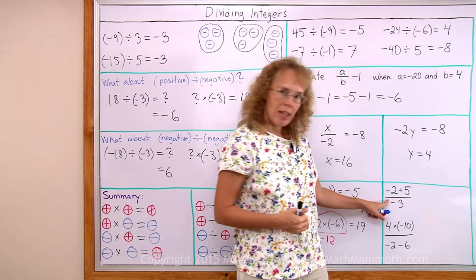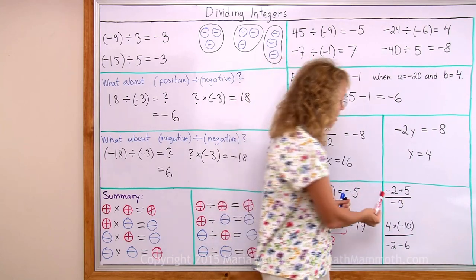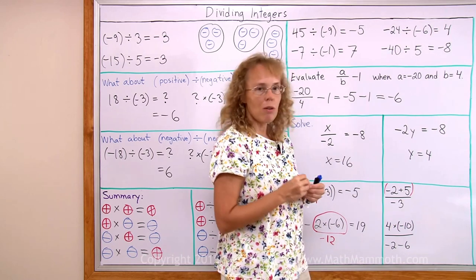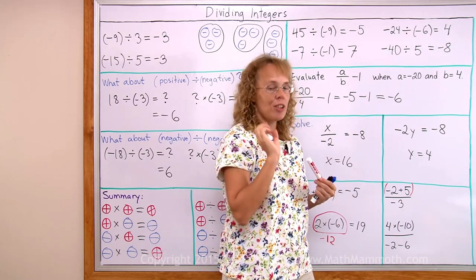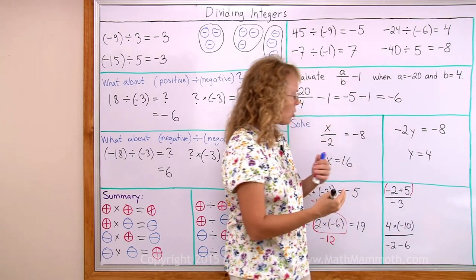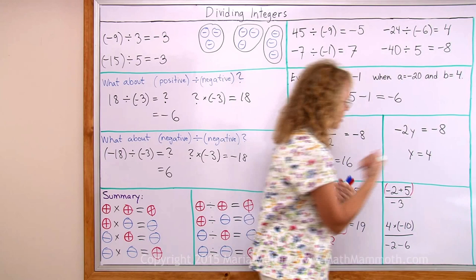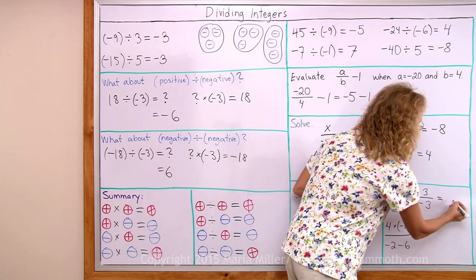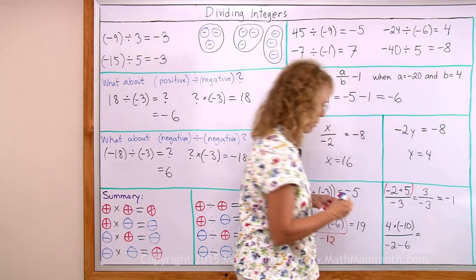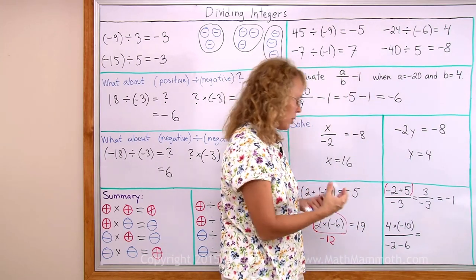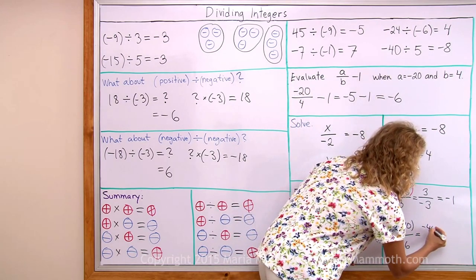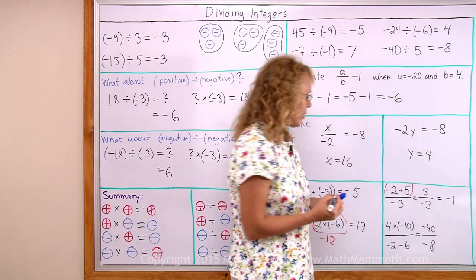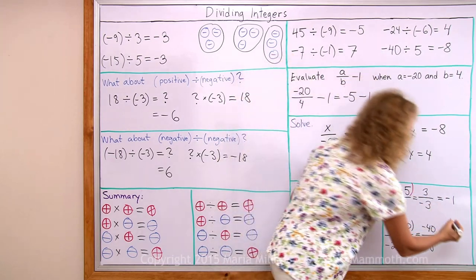Over here we have a division fraction line and addition. Remember, whenever division is written with a fraction line, it implies parentheses — we need to solve whatever is on the top and bottom first, then divide. Top: negative 2 plus 5 equals 3. So we get 3 over negative 3, which is negative 1. Similarly in the last problem, solve top and bottom first: 4 times negative 10 is negative 40 on top. On the bottom, negative 2 minus 6 is negative 8. Now negative 40 divided by negative 8 — negative divided by negative — the answer is positive 5.